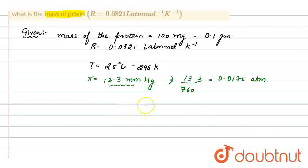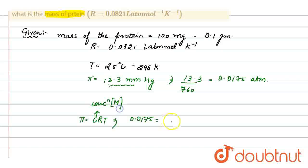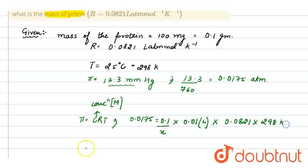We'll proceed by using the formula: pi equals CRT. Pi is 0.0175, and C means the concentration in molarity. Weight of the solute is 0.1, molecular weight we have to find out, volume of the solution is 0.01 liters, gas constant is 0.0821, and temperature is 298 kelvin. After solving these, the molecular mass of the protein is 13963.42 grams per mole.